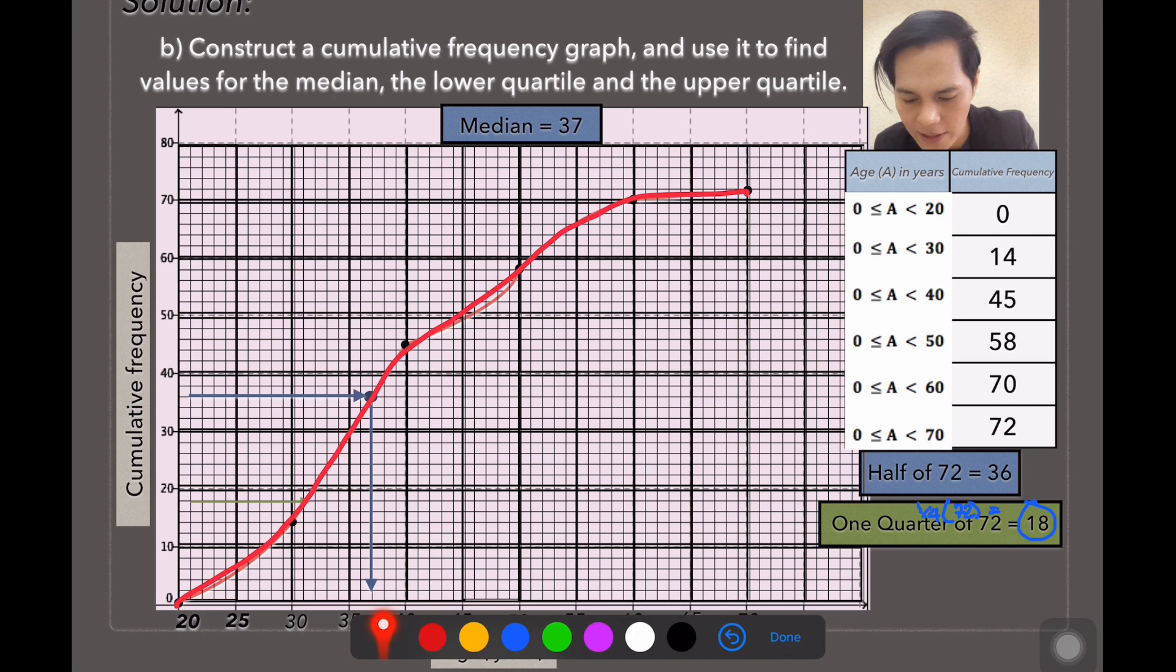Now, check out here, 18 in the cumulative frequency, and then that corresponds in age in years, which is 32. Therefore, the lower quartile is 32.